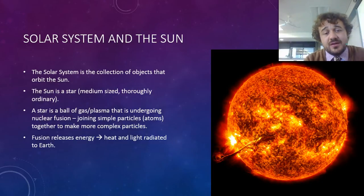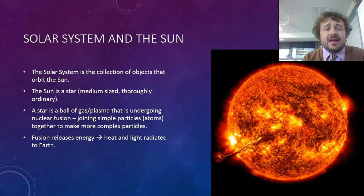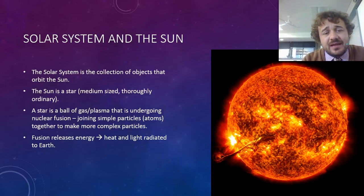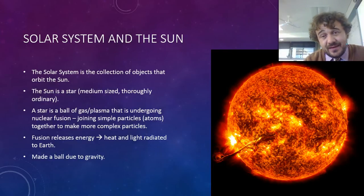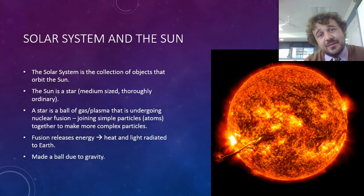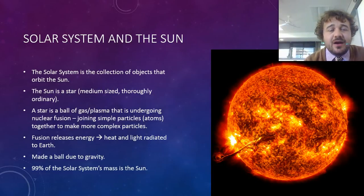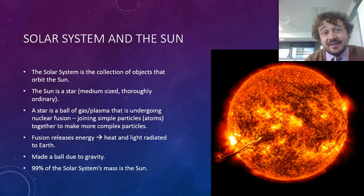During that fusion, it releases a lot of energy — and that is all heat and light that's radiated out to the Earth. Gravity is what brings it in as a ball; it's what makes it a ball. 99% of the solar system's mass is the Sun — like, that's the Sun.